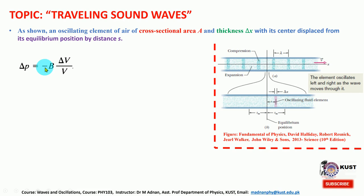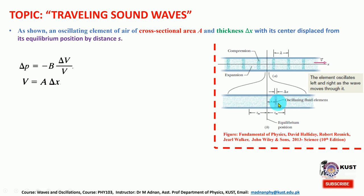Based on that definition of bulk modulus, we can write the pressure variation due to the motion of the oscillating fluid. The original volume is the cross-sectional area A times the thickness delta x. The volume change is equal to the cross-sectional area A times the variation in s, because as the element is displaced by distance s, there is a change in volume.